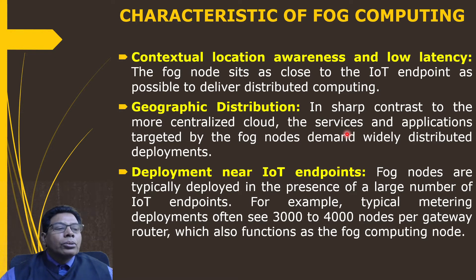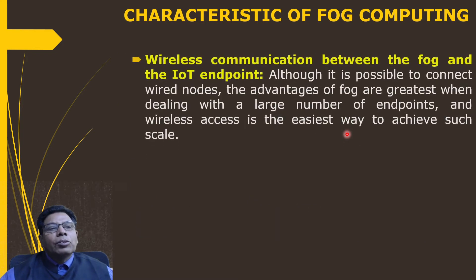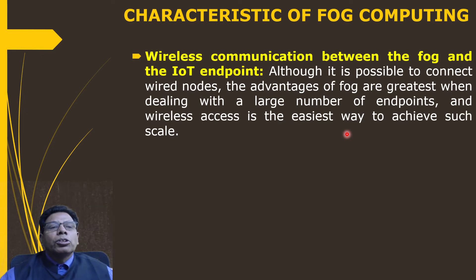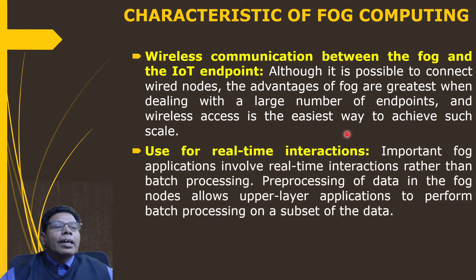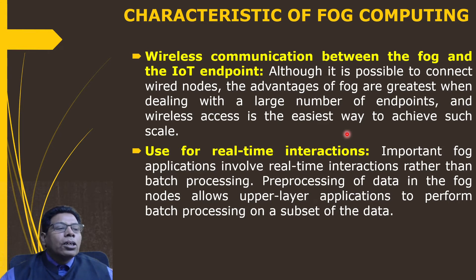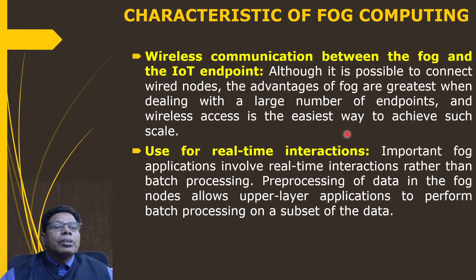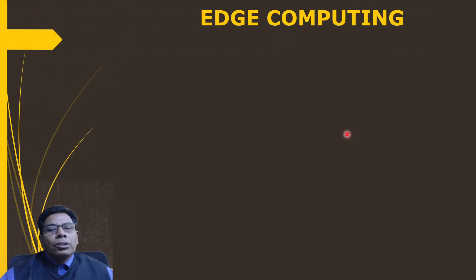Fourth, wireless communication between fog and IoT endpoints: because of the large number of endpoints, wireless access provides an advantage over wired connections. Fifth, use for real-time interaction: important fog applications involve real-time interactions rather than batch processing. Pre-processing of data in fog nodes allows upper-layer applications to perform batch processing on a subset of the data, with the actual batch processing handled by upper layers.